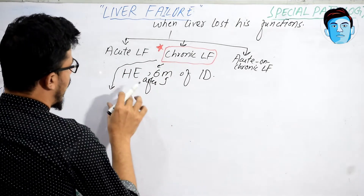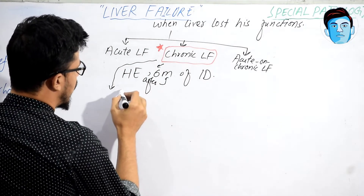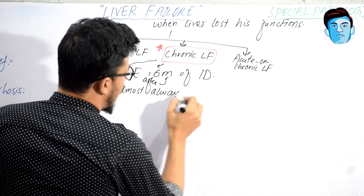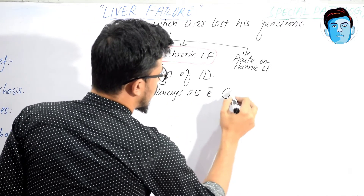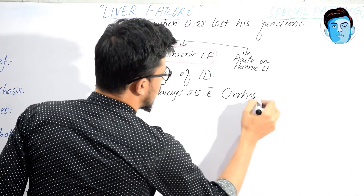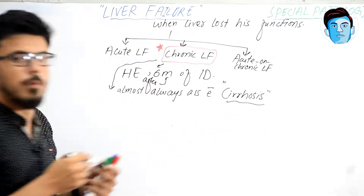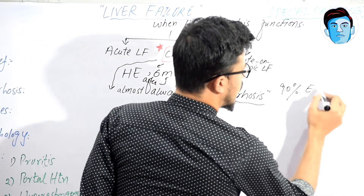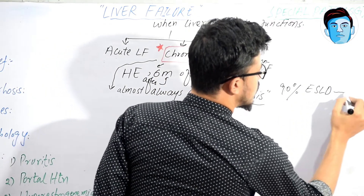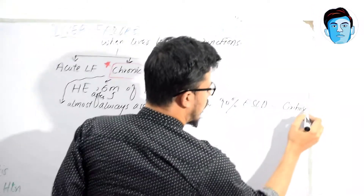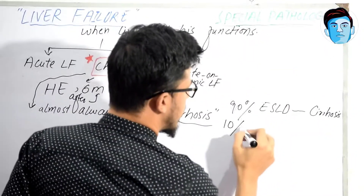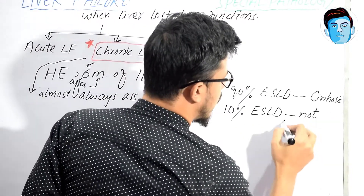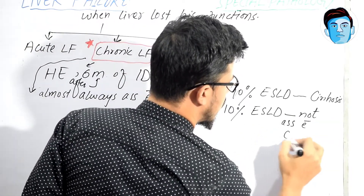This chronic liver failure is almost always associated with cirrhosis. In 90% of cases, end-stage liver disease is associated with cirrhosis, while in 10% of cases, end-stage liver disease is not associated with cirrhosis.